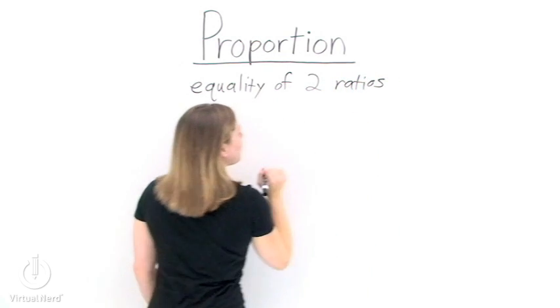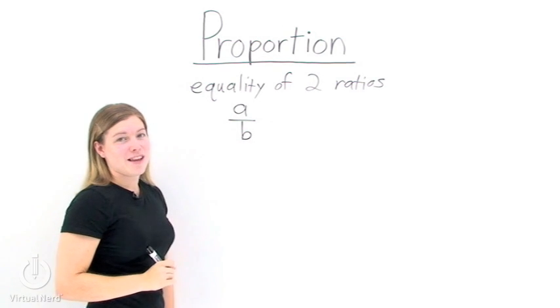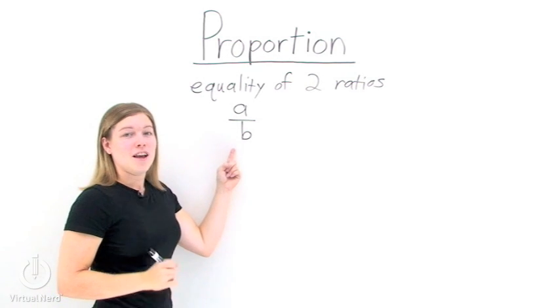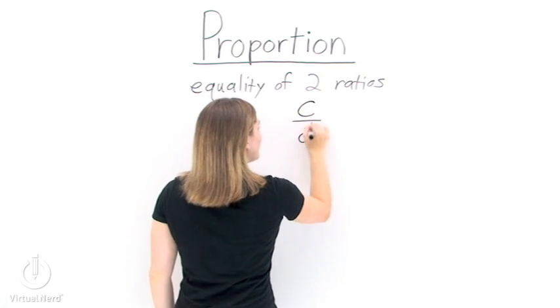One of the ways we write ratios is like this: a over b. This is a ratio. Now, since we have two ratios, we pick another one: c over d.